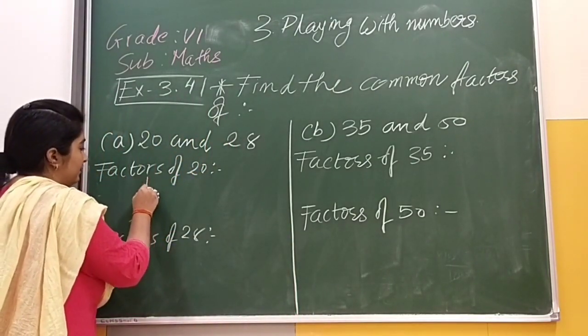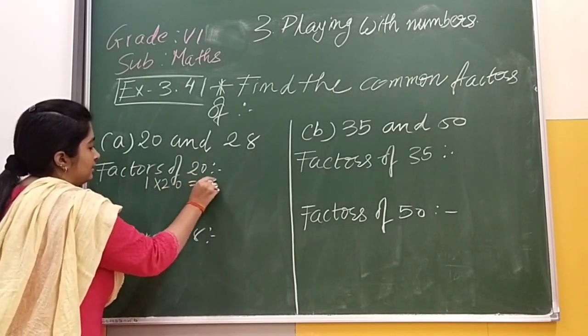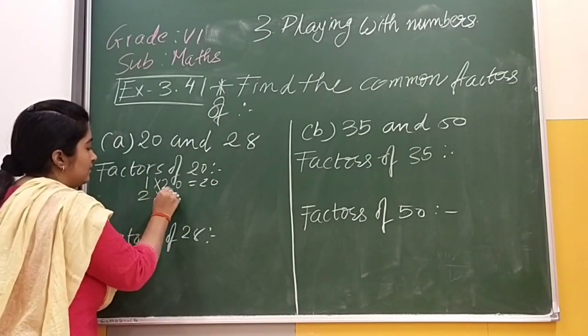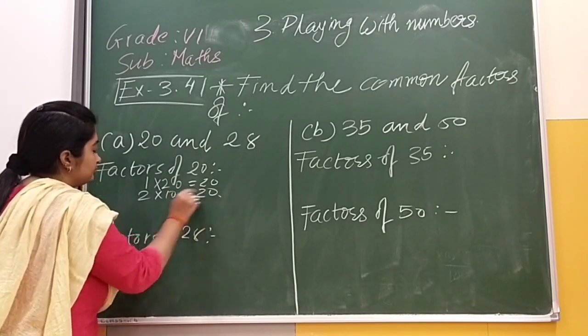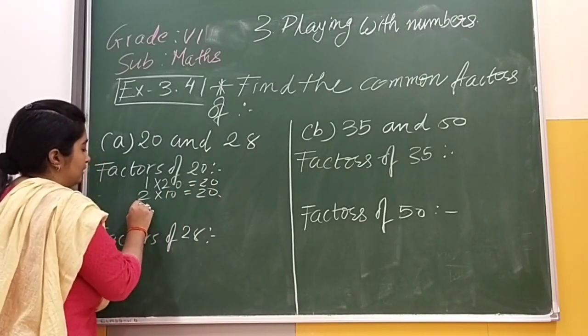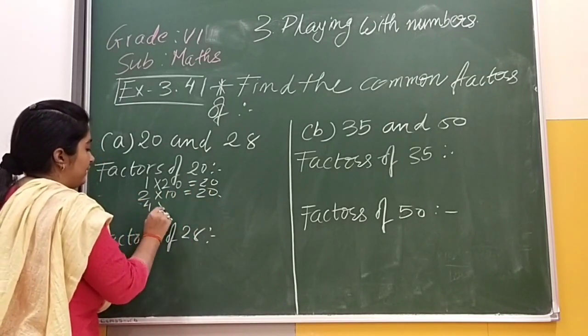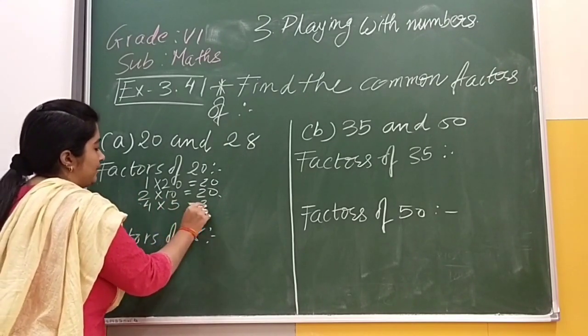First of all factor of 20, that is 1 into 20 is 20. Then it can be 2 into 10 is 20. Then 3 cannot be, 4 into 5, 4 into 5 is 20.